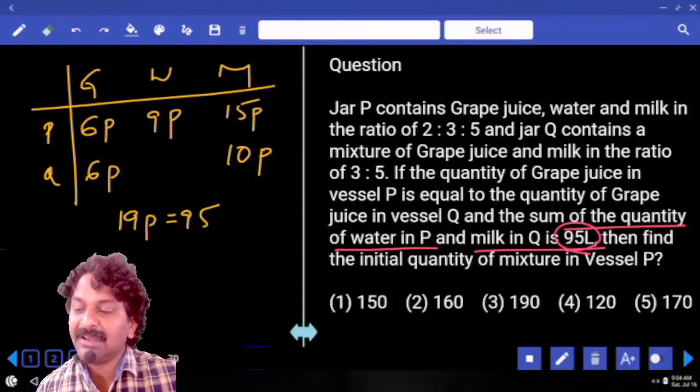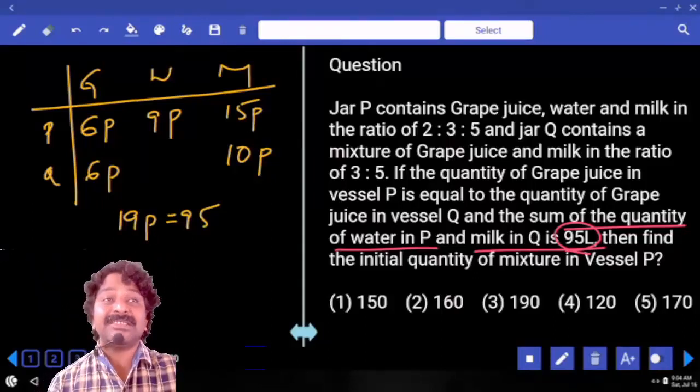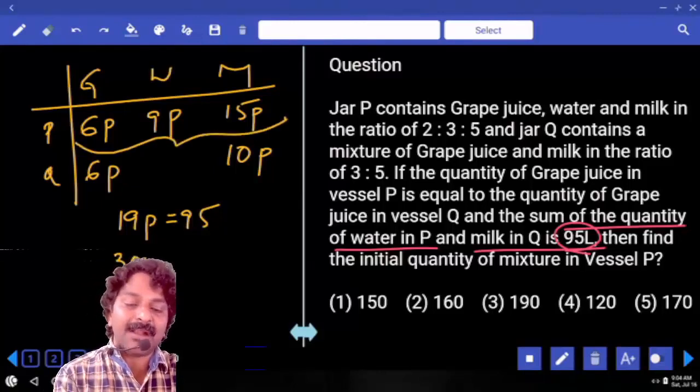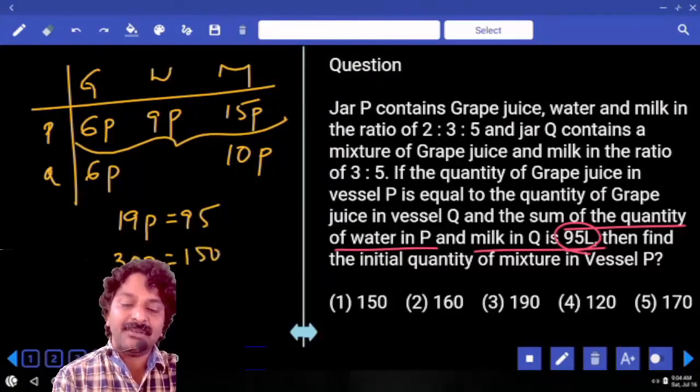Now, what exactly is the question? Initial quantity of mixture in vessel P. P has 30 parts, so 30 times 5.